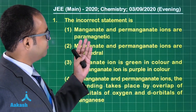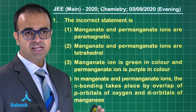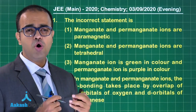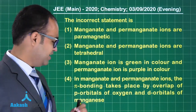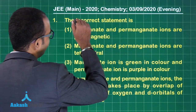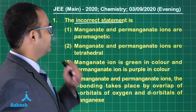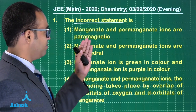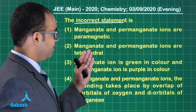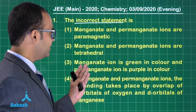The first question asks for the incorrect statement and is from compounds of D-block. Please go through all the statements very carefully. First, make a note that they are asking for the incorrect statement. The statements are: manganate and permanganate ions are paramagnetic; manganate and permanganate ions are tetrahedral.